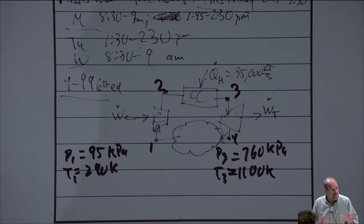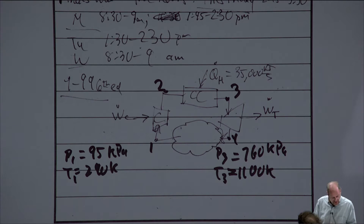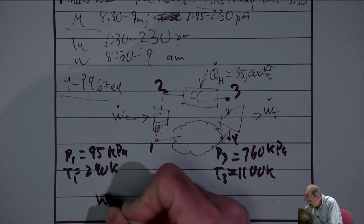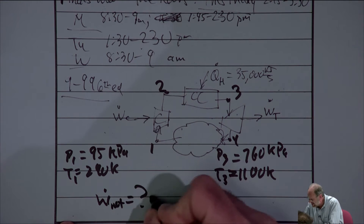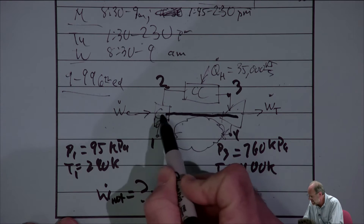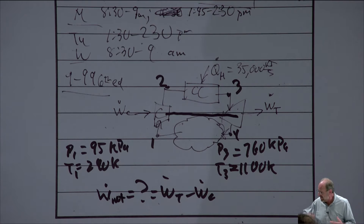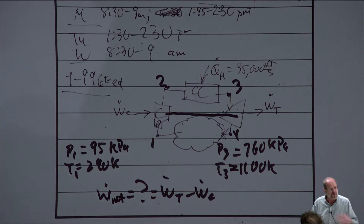Make sure you read these problems carefully — sometimes they ask for turbine output power, sometimes compressor input, sometimes net power output. When it says power delivered by this plant, the whole gas turbine engine is the power plant, so it's the net work we're calculating. I'm also going to add finding the thermodynamic efficiency and the mass flow rate of air through this cycle.